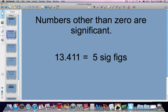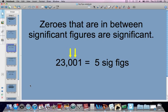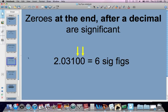Rule number one: numbers other than zero are significant. Obviously there's no zeros here, so every single one of these digits is significant—this has five sig figs. When are zeros significant? Anytime you have zeros sandwiched in between sig figs, they are significant. So this has five sig figs.